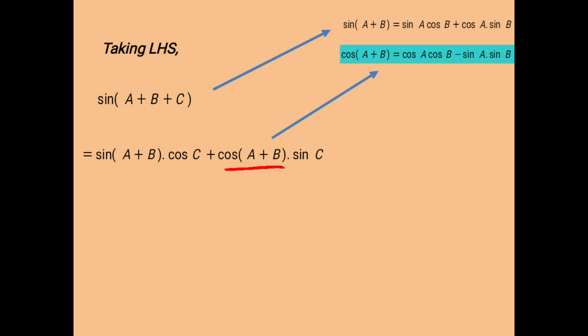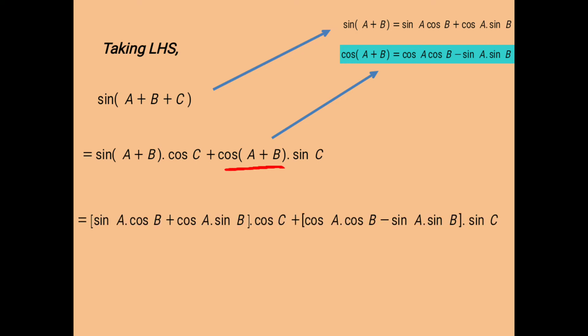We expand sine(A+B) as sinA·cosB minus cosA·sinB. Similarly, cos(A+B) has also been converted into formula form, and cosC and sinC remain the same from the above step.